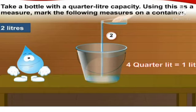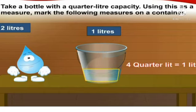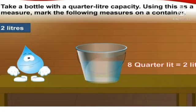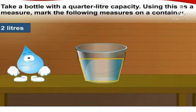Children, if you pour 4 quarter litre bottles in a container, it makes 1 litre. So to make 2 litres of water, you will have to pour 8 quarter litre bottles. Understood? Here you got 2 litres of water in a container.